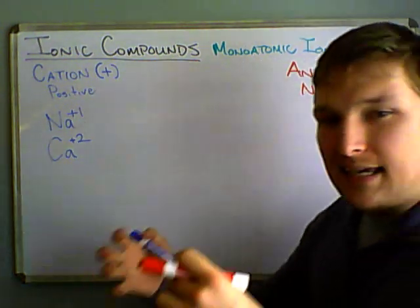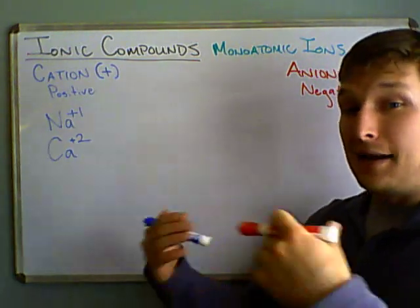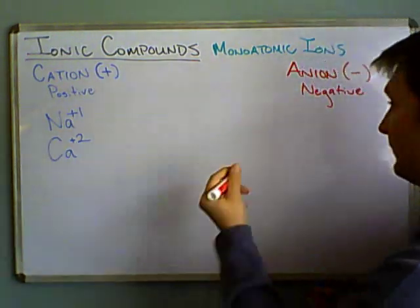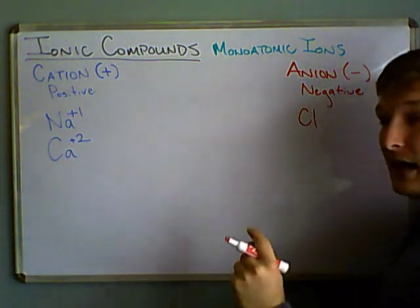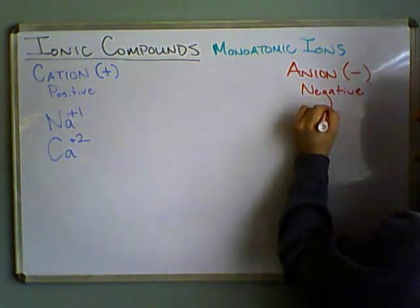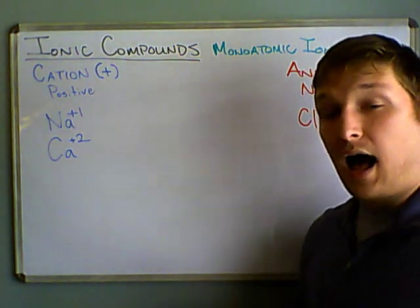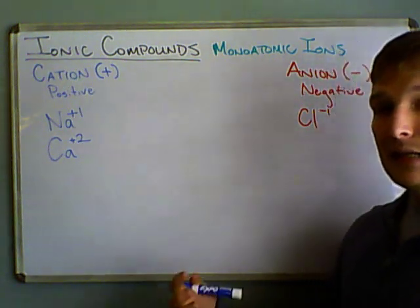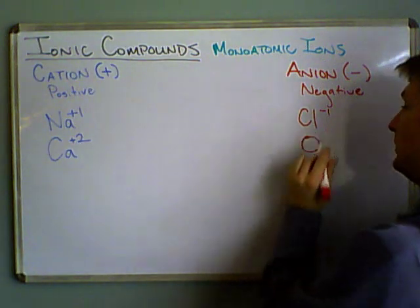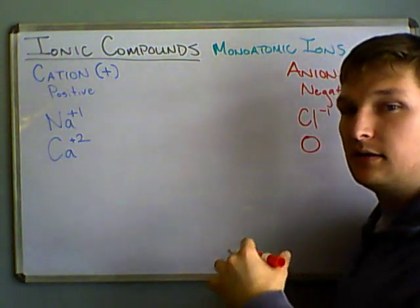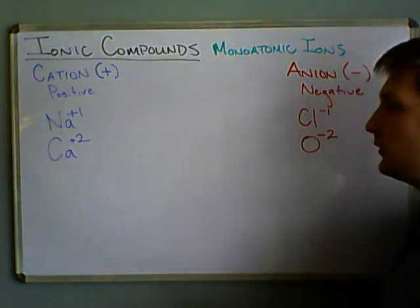Chlorine, on the other hand, it likes to gain electrons. So, if you gain a negative charge, you become negatively charged. And so, chlorine likes to gain one electron, so it becomes chlorine minus one. Whereas oxygen, for instance, it likes to gain two electrons. So, oxygen, if it gains two electrons, now it has a charge of minus two.